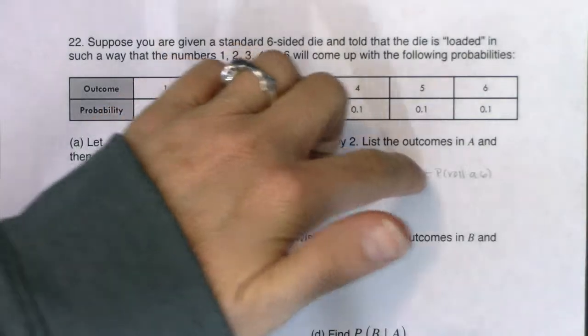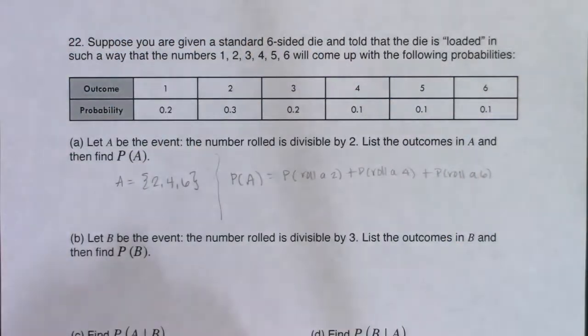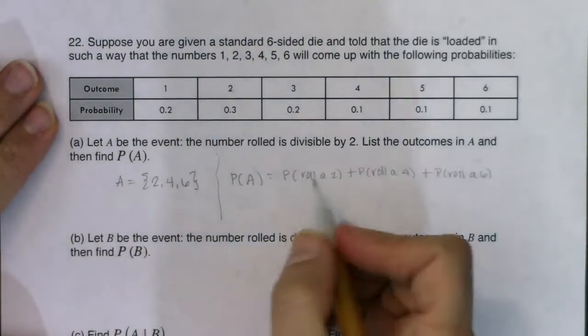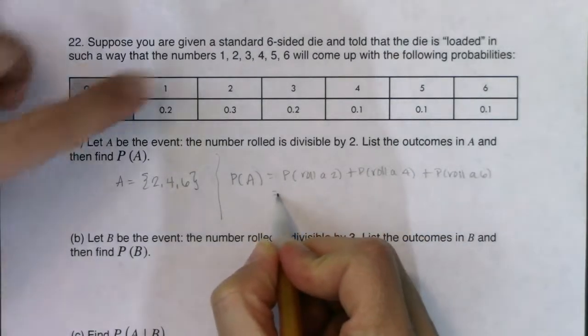All right? Same with four and six, or even two, four, and six. They're all disjoint. None of those can happen at the same time if you are rolling one die. So let's see what these respective probabilities are.